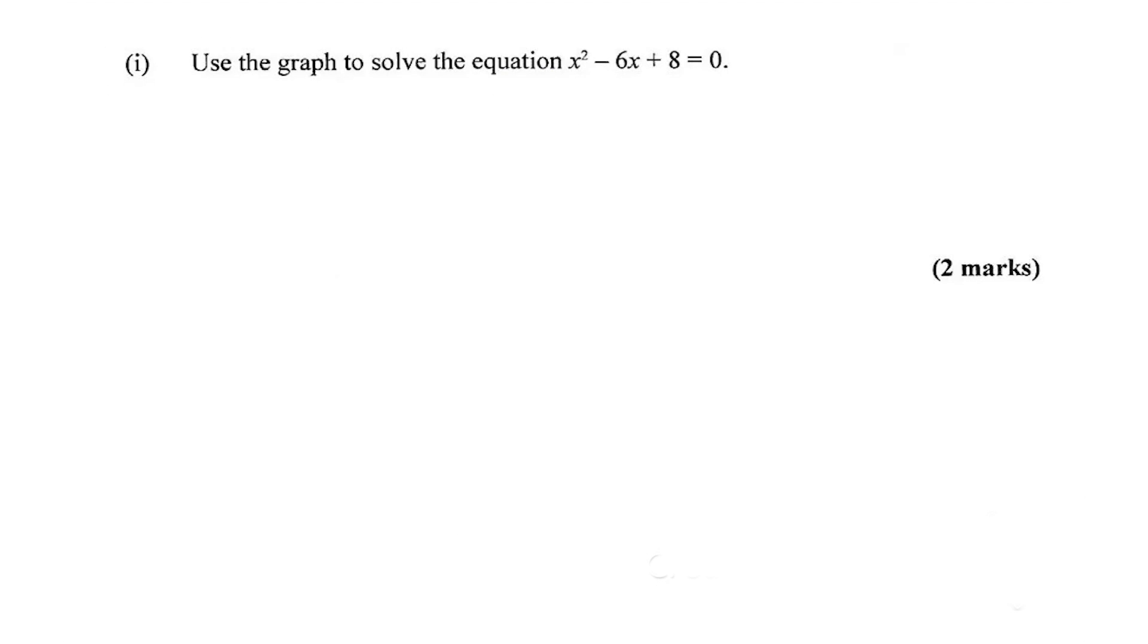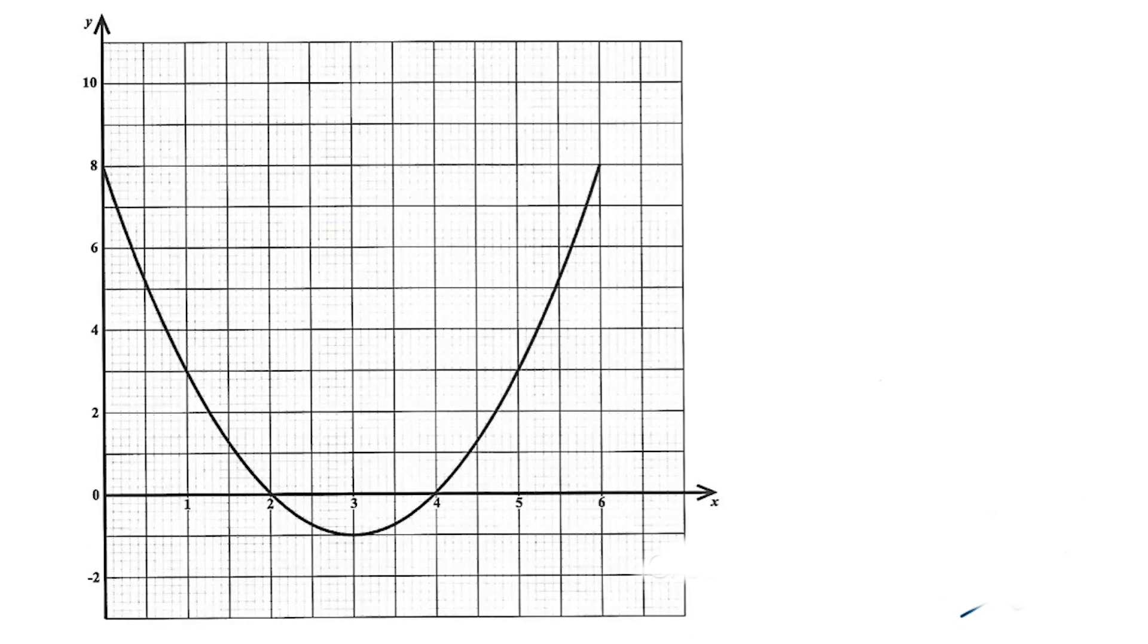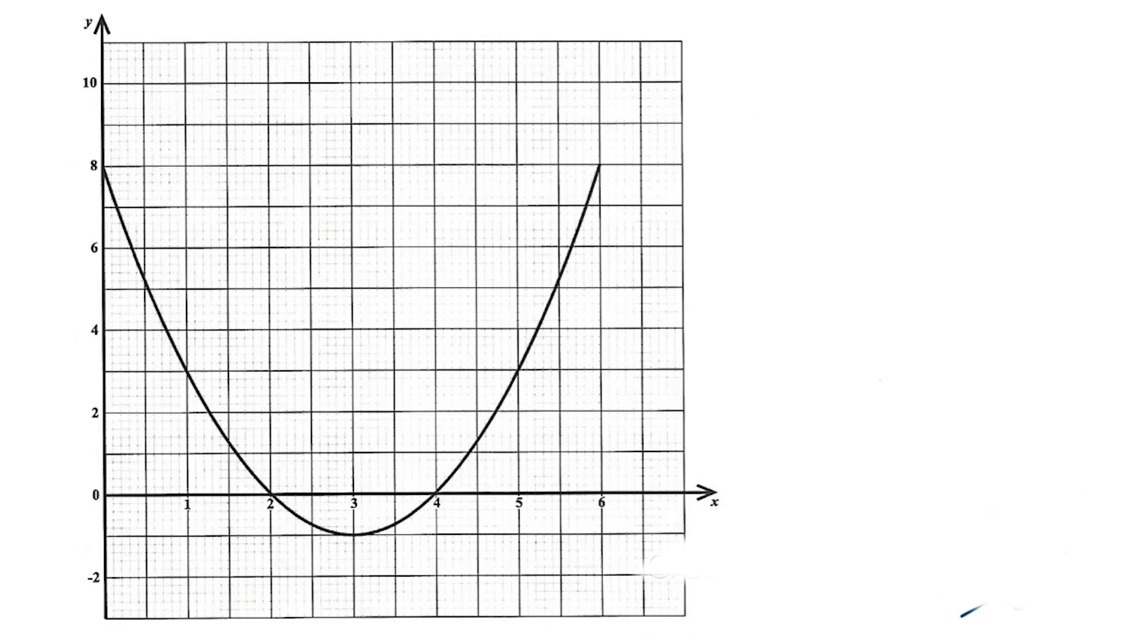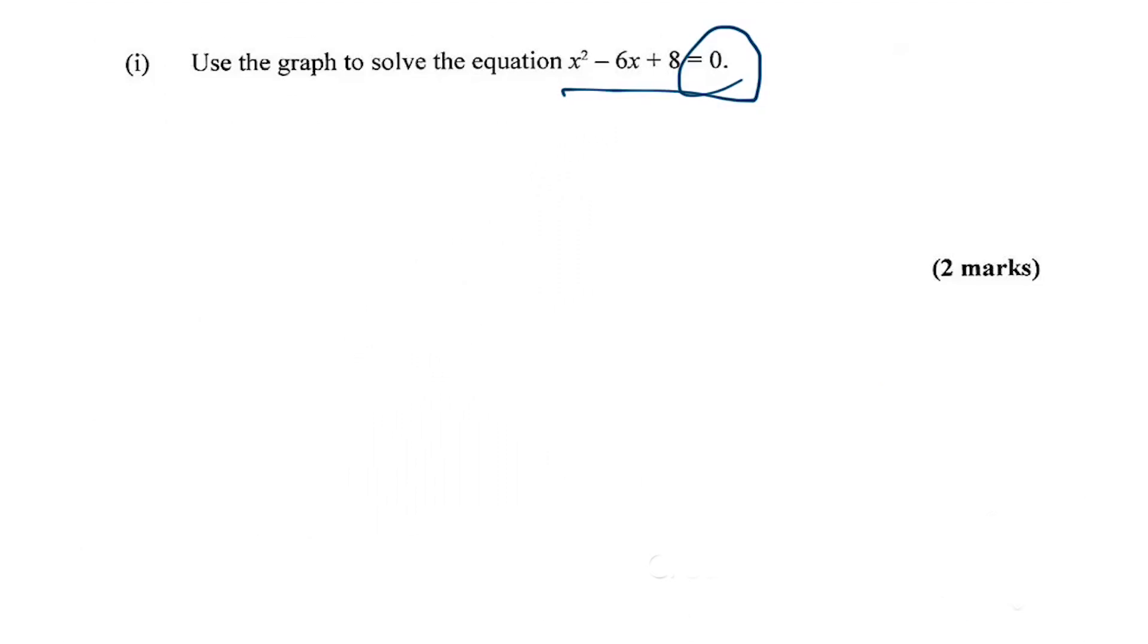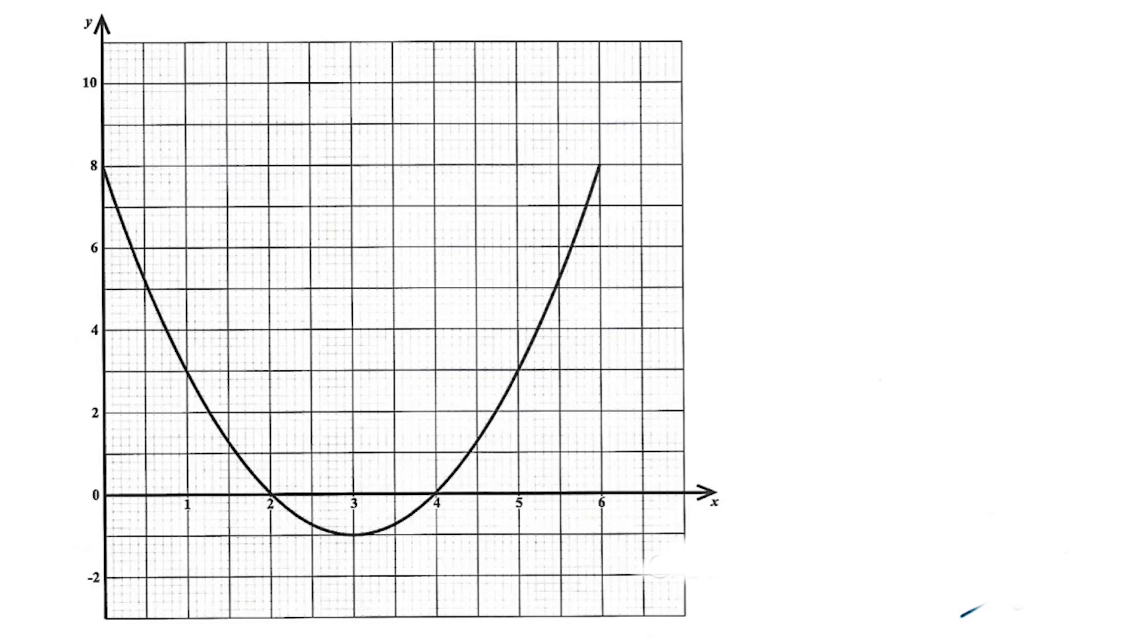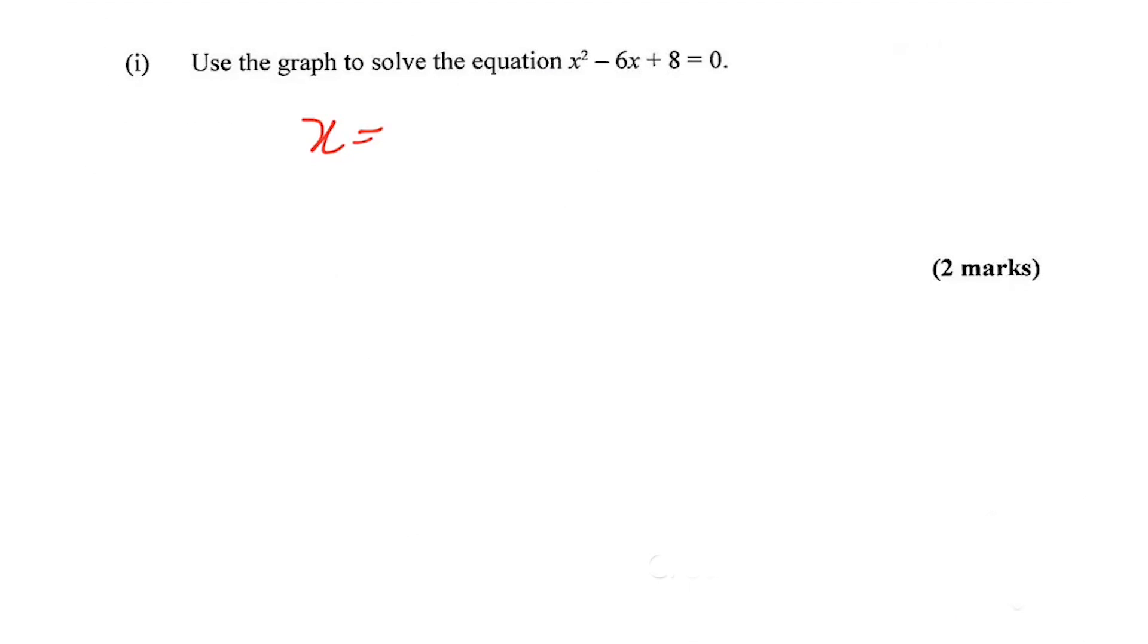Use the graph to solve the equation. You have a little graph there and you need to use it to solve the equation x² - 6x + 8 = 0. If we look back at the graph, this equals zero right here at these two points. Those are the roots, so x = 2 and x = 4.